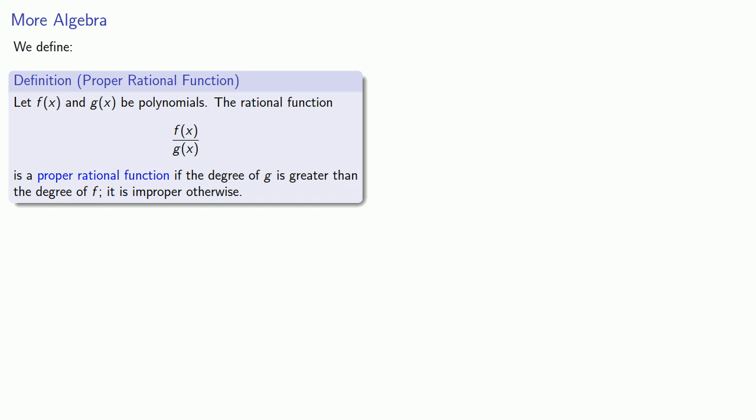And one useful idea is that if we do have an improper rational function we can use polynomial division to transform it into a polynomial plus a proper rational function.